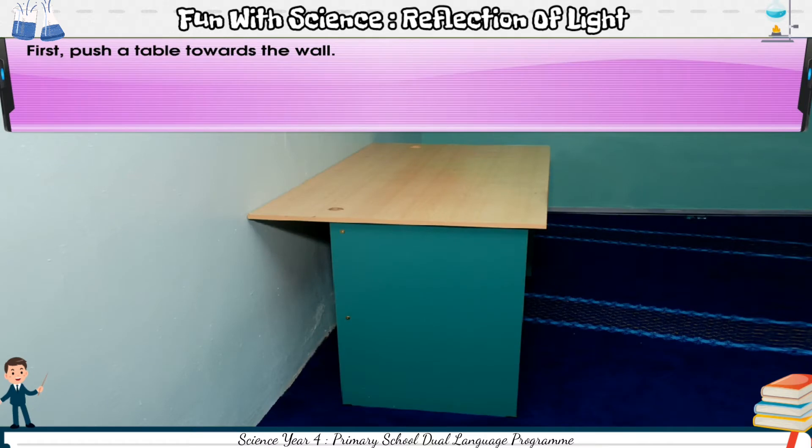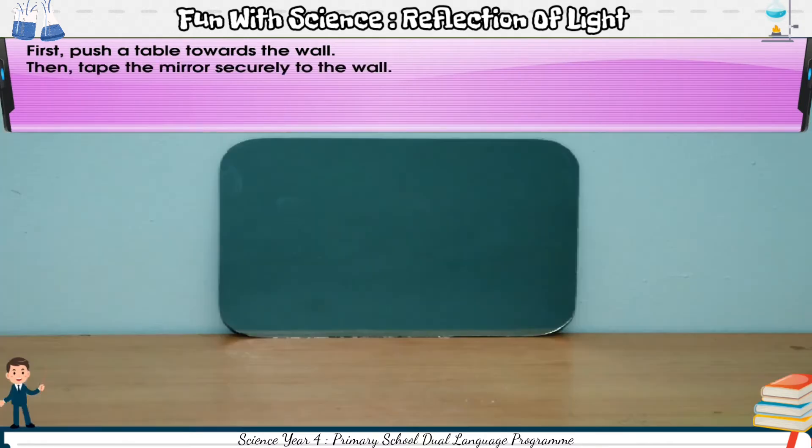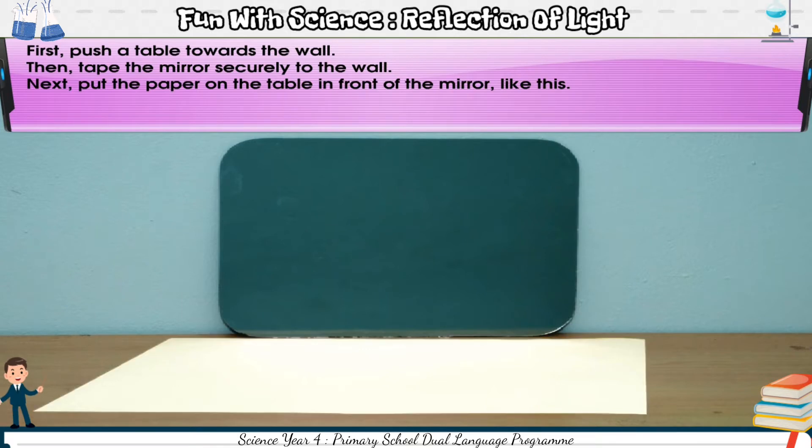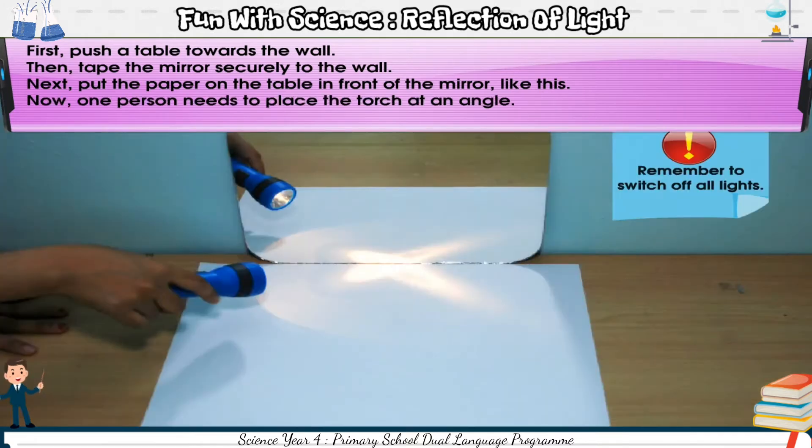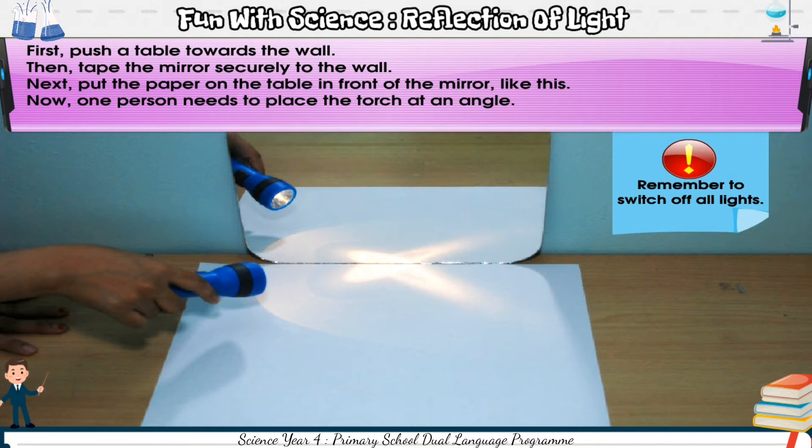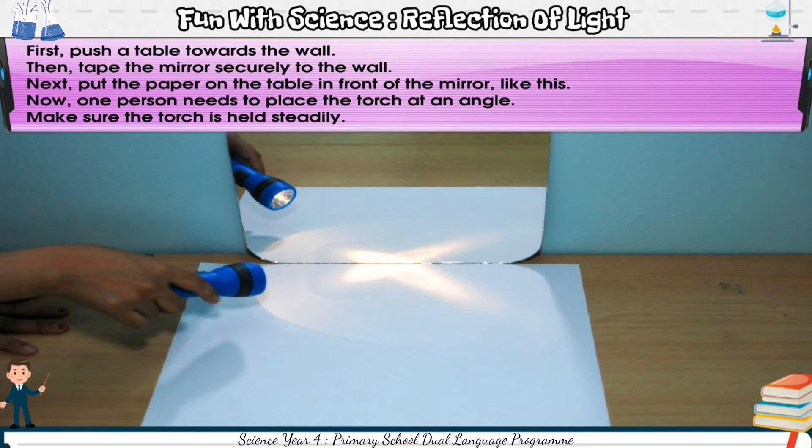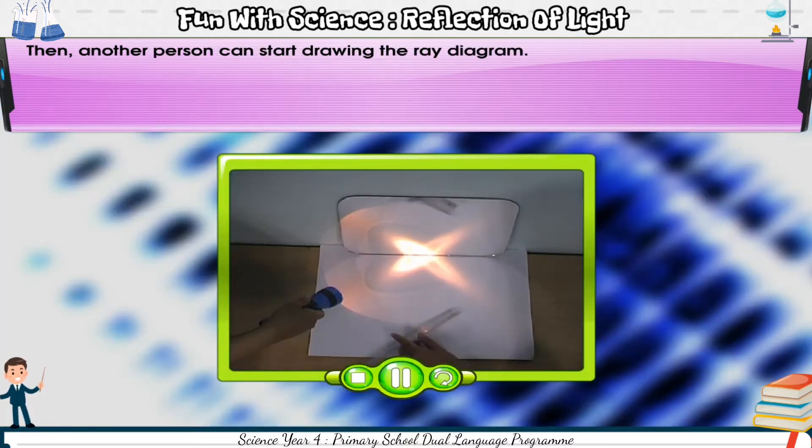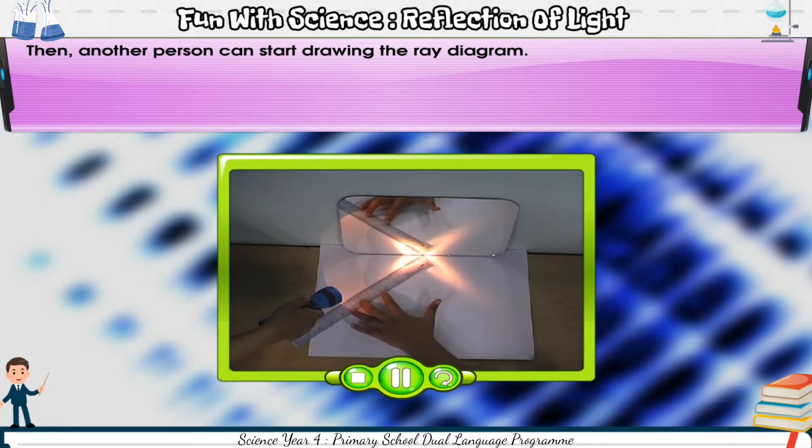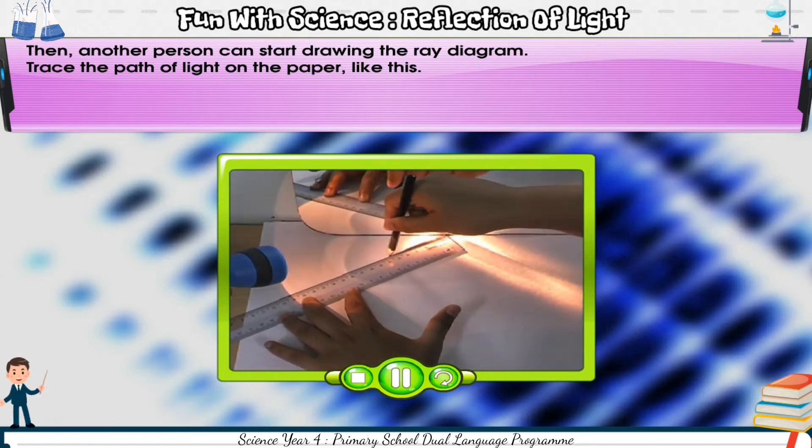First, push a table towards the wall. Then, tape the mirror securely to the wall. Next, put the paper on the table in front of the mirror, like this. Now, one person needs to place the torch at an angle. Make sure the torch is held steadily. Then, another person can start drawing the ray diagram. Trace the path of light on the paper, like this.